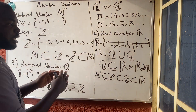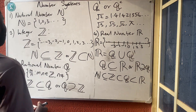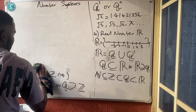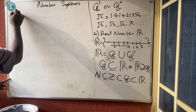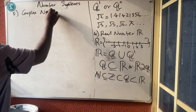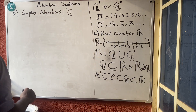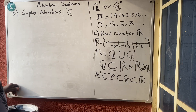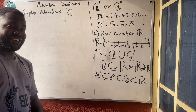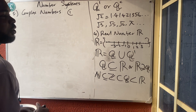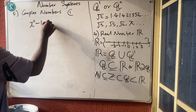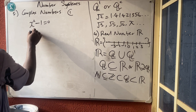The last number system I am going to teach you is the complex number, number five, represented with C. Complex numbers came about when mathematicians met to solve an equation. Someone gave the equation x² - 1 = 0 and we found x = ±1. Then another person changed it to x² + 1 = 0, giving x² = -1, so x = √(-1).